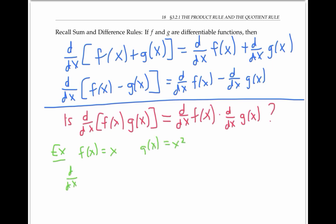then if we take the derivative of the product x times x squared, well, that's just the derivative of x cubed. We know how to do that with the power rule, so it's 3x squared. On the other hand, if we look at the product of the derivatives, we get 1 times 2x, or just 2x. And these two things are not equal.